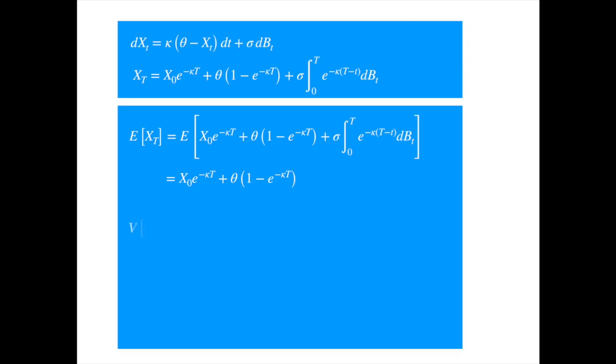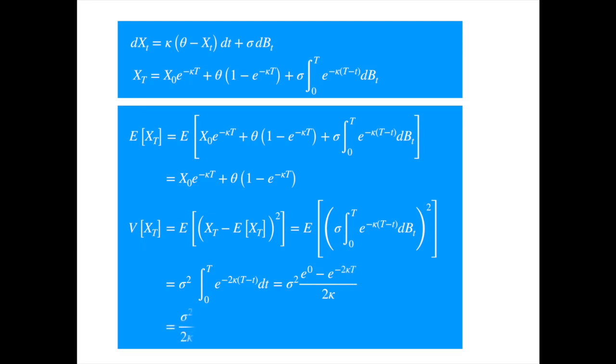Taking expectation of both sides and noting that the expected value of a deterministic function with respect to Brownian is zero, we get the formula for the mean: E[X_t] = X_0 e^(-kappa t) + theta(1 - e^(-kappa t)). For variance, let's reproduce the variance formula. Subtracting mean of x_t from its solution leaves us with only the stochastic term. And then straightforward application of Ito's isometry rule gives us a deterministic integral that we can easily evaluate.